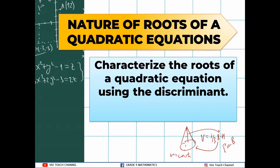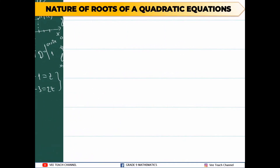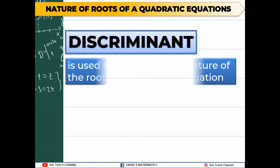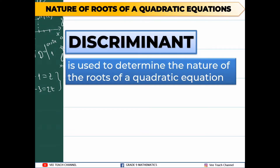We already know how to get the roots or solution of a quadratic equation. This time, we're going to characterize or describe the roots of our equation, and we will be using the discriminant. A discriminant is used to determine the nature of the roots of a quadratic equation.